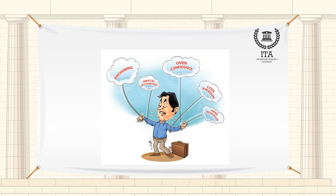Then there is anchoring. People are often overly influenced by outside suggestion. People apparently also suffer from status quo bias — they are willing to take bigger gambles to maintain the status quo than they would be to acquire it in the first place.